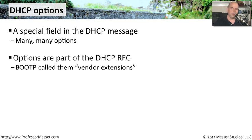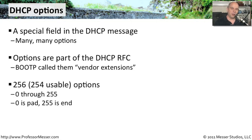If you look at Boot P, we call them vendor extensions, but it is effectively exactly the same thing. There are up to 254 usable options inside of it, and they're numbered 0 through 255. Option 0 is reserved as a pad, and 255 is reserved as the end option. So everything in the middle can be used as configuration options inside of DHCP.